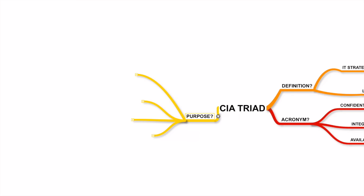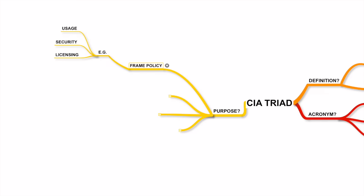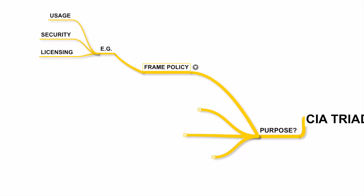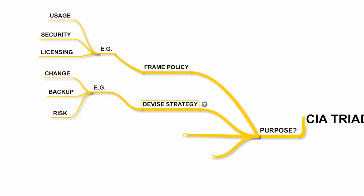Let us now look at the purpose of the CIA Triad. It is used to frame IT policies. An organization will review the CIA areas to chalk out the IT policy that would highlight the various services and how users should use them in the best interest of the business. For instance, the policy could detail out service usage procedures, security directives, and license release and use restrictions — all of these are directly connected to the base CIA model.